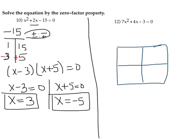So here's my box. In the first term, in the first box rather, I write the first term, 7x squared. In the last box, I'll write the last term, in this case, negative 3.